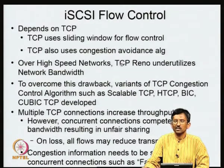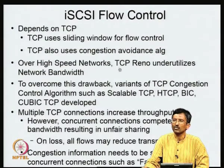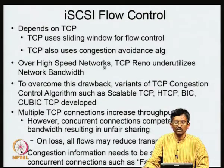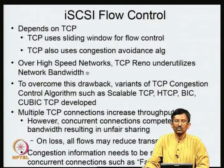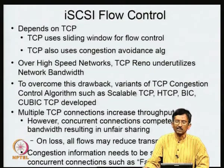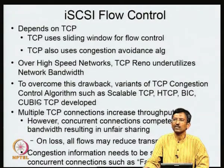On high-speed networks, the typical TCP — TCP Reno, for example, currently supported in Linux alongside Cubic — underutilizes network bandwidth. Since storage requires high bandwidth, especially for backup operations, it is particularly important to use network bandwidth efficiently. Since TCP Reno underutilizes network bandwidth, we need different models. Various other types have been proposed: Scalable TCP, HTCP, BIC, and Cubic TCP. Cubic TCP is currently in recent Linux kernel versions; BIC was present from kernel 2.6.8 to 2.6.18 but is no longer in standard kernels.